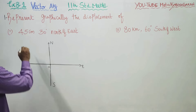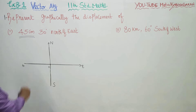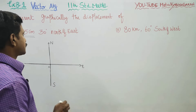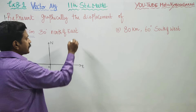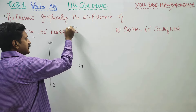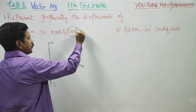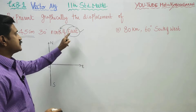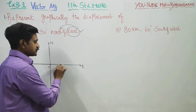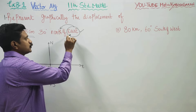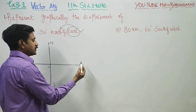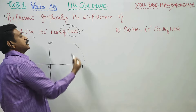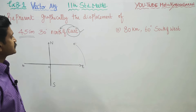You are moving from the origin 45 centimeters, 30 degrees north of east. North of east means east is your starting point and you have to move towards north — that is, you have to move in the anticlockwise direction.